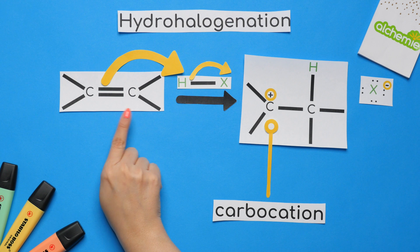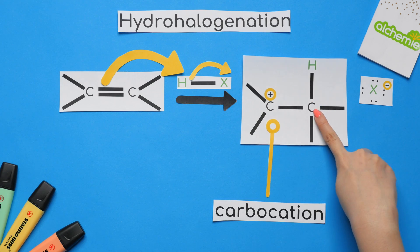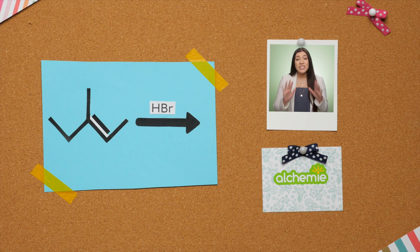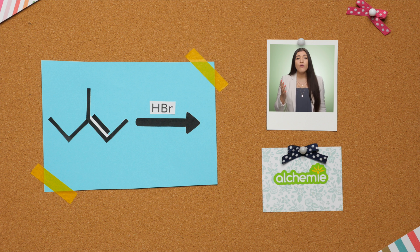Since this alkene was symmetrical, it does not matter where the hydrogen or carbocation goes, whether it's this carbon or the other. But if an alkene is not symmetrical, then it does matter where the hydrogen and carbocation goes. This video, which I'll link up right now, goes over what to do when an alkene is not symmetrical.